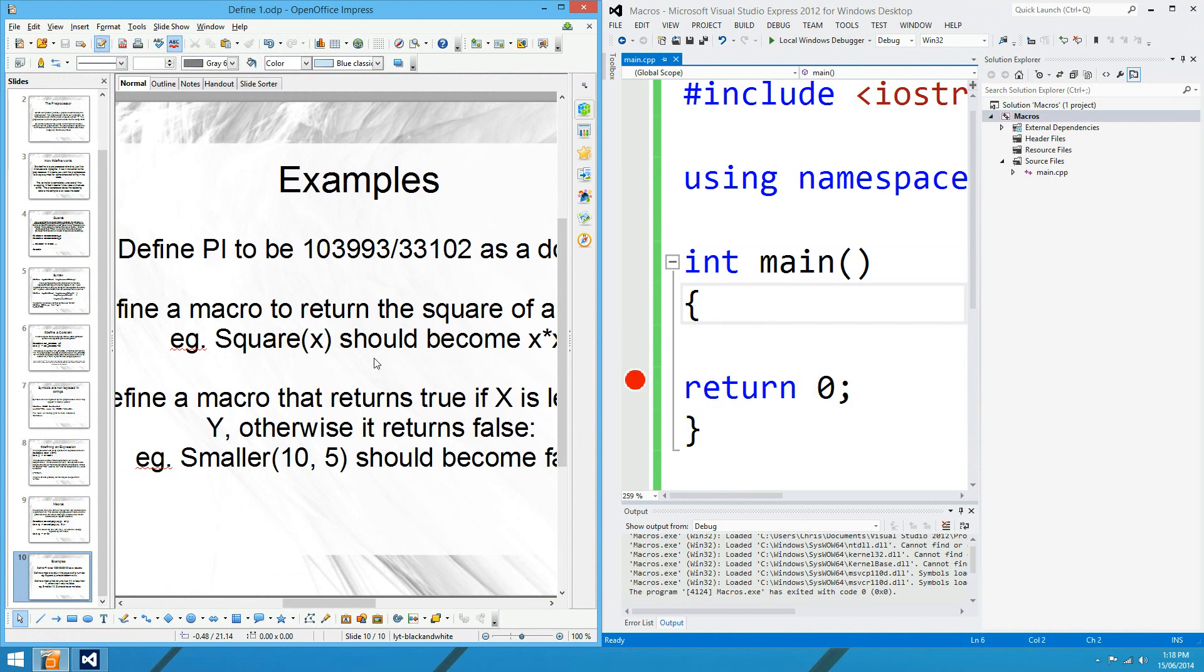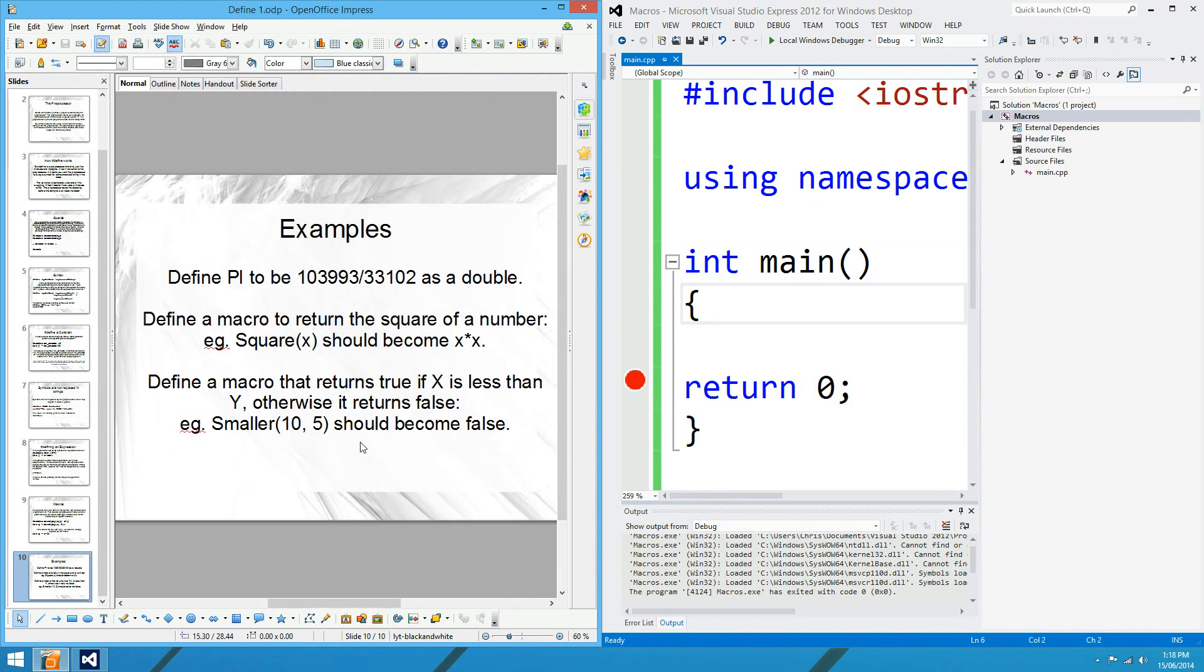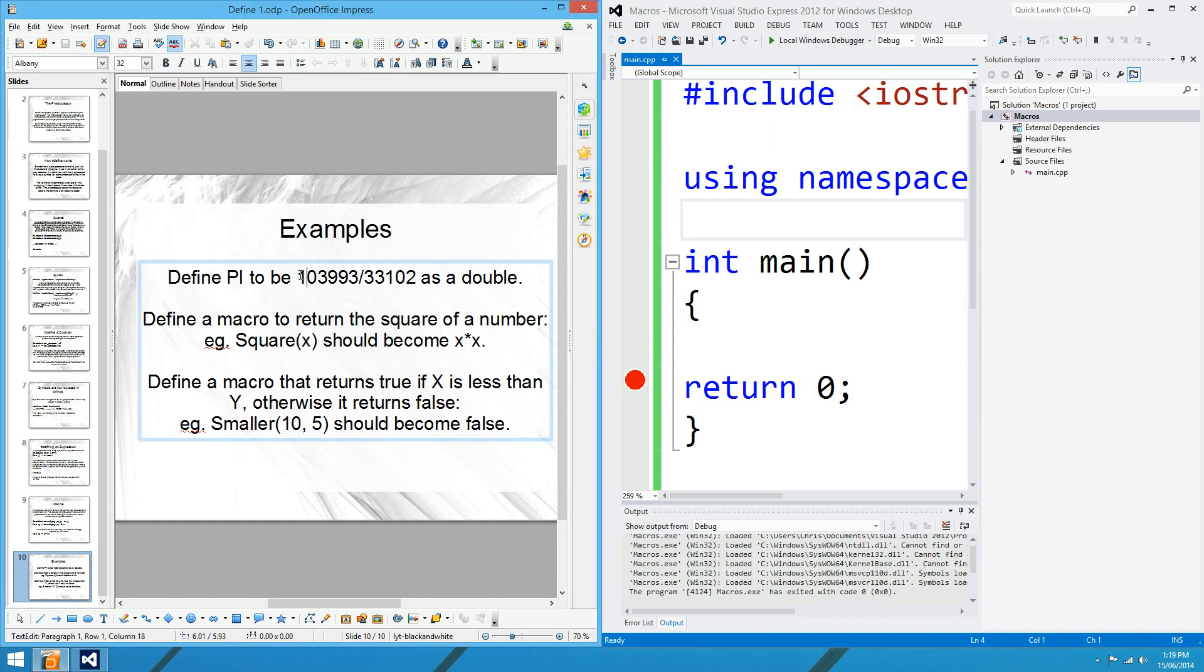Okay, let me just see if I can make this a bit more to my liking. Okay, so the first example, I'm going to do these as we go, but have a go yourself if you like. The first example, I want you to code this, or define this fraction here as a double to be pi. Yeah, so that's not actually pi, you know, pi is irrational, but that's pretty close. The next one, I want you to define a macro to return the square of a number. Yeah, so the symbol name there will be square, it's going to take one parameter, and I want it to return x squared, or x times x. And the last one that I want you to do, if you can be bothered, give it a go. Define a macro that returns true if x is less than y, otherwise it returns false.